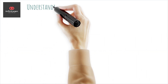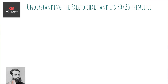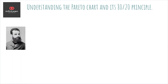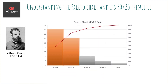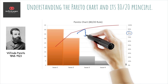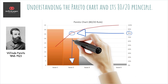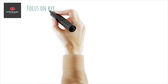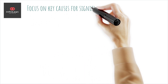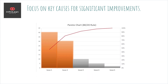So what is a Pareto chart? A Pareto chart is a specialized bar graph that highlights the most significant factors in a data set. Named after Vilfredo Pareto, this chart is based on the 80-20 principle, which suggests that 80% of problems are often due to 20% of causes. By focusing on these key causes, organizations can achieve significant improvements with minimal effort.